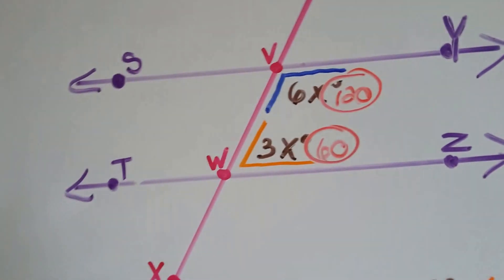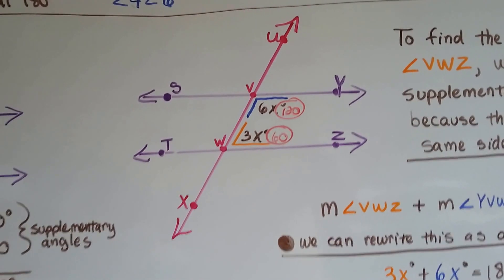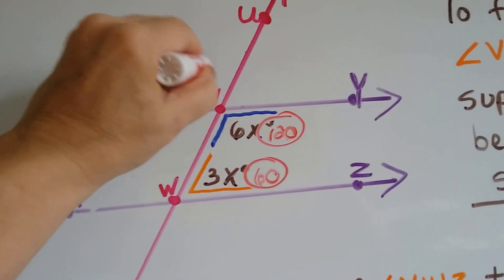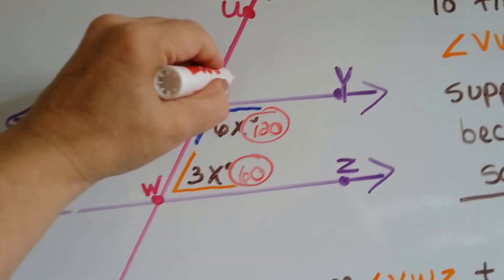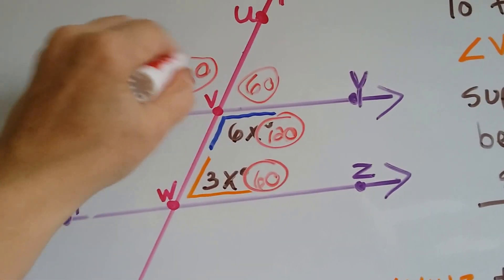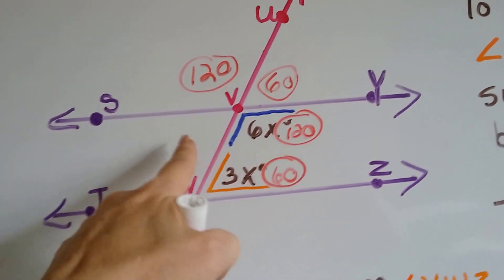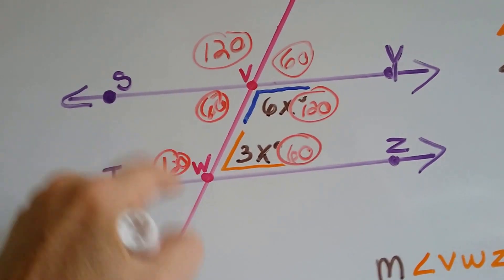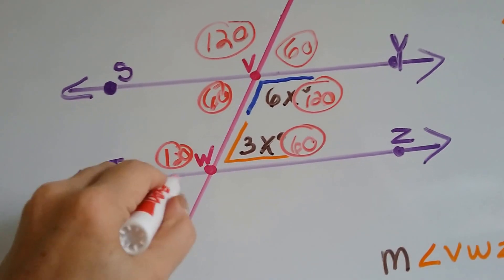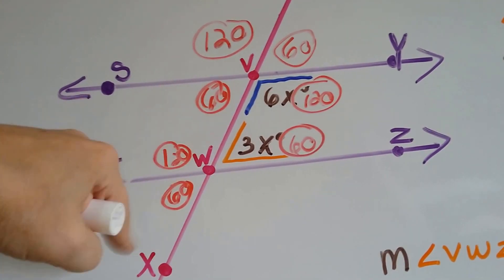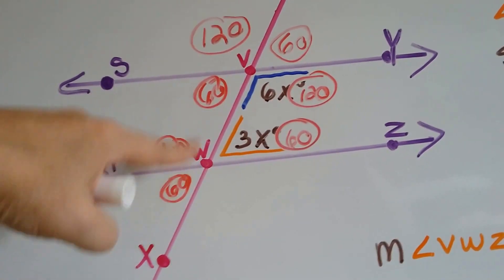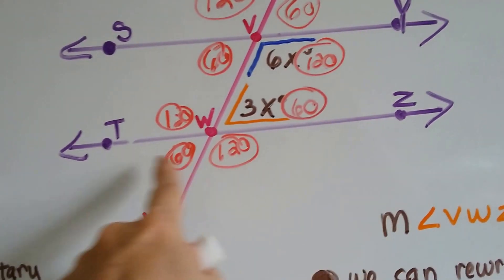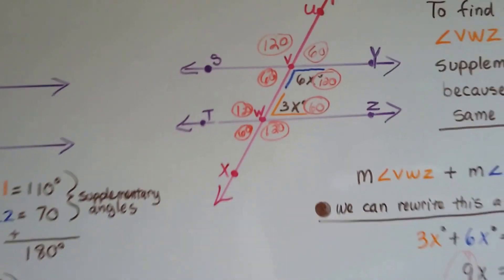Now we know what all eight angle measures are. If we have just one angle, we know them all. This angle has to be 120, and that one is 60, because pairs along the transversal must total 180. If one is 120, the adjacent one is 60, and vice versa. Going along the transversal, they form supplementary pairs. We can determine all eight angle measures this way.